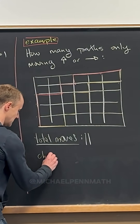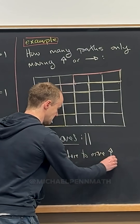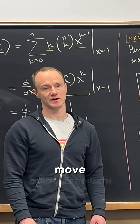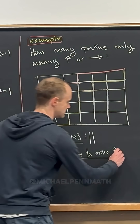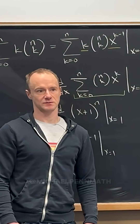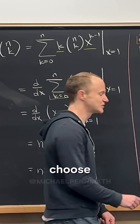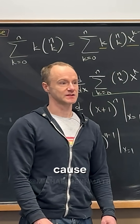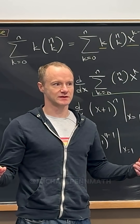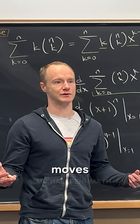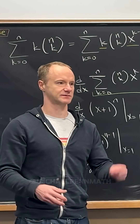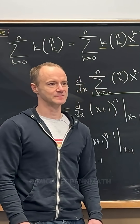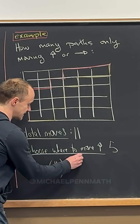Of those eleven moves, how many do we choose to move up? One, two, three, four, five. So the answer is eleven choose five. All we have to do is look at all eleven moves and choose which of those we want to be up moves. You could also choose where to move right, giving you eleven choose six, but those numbers are the same.